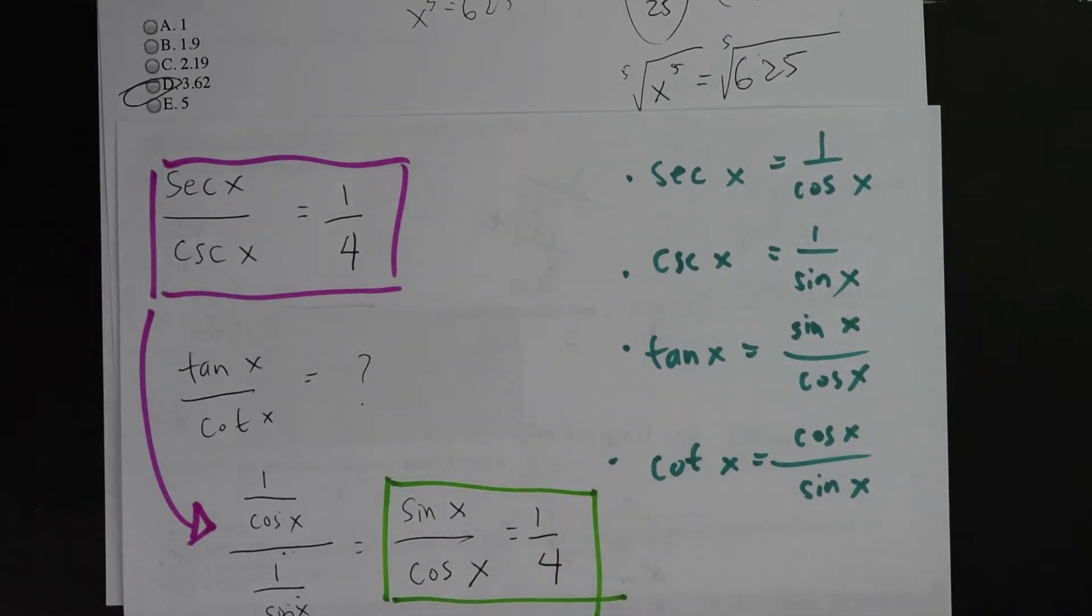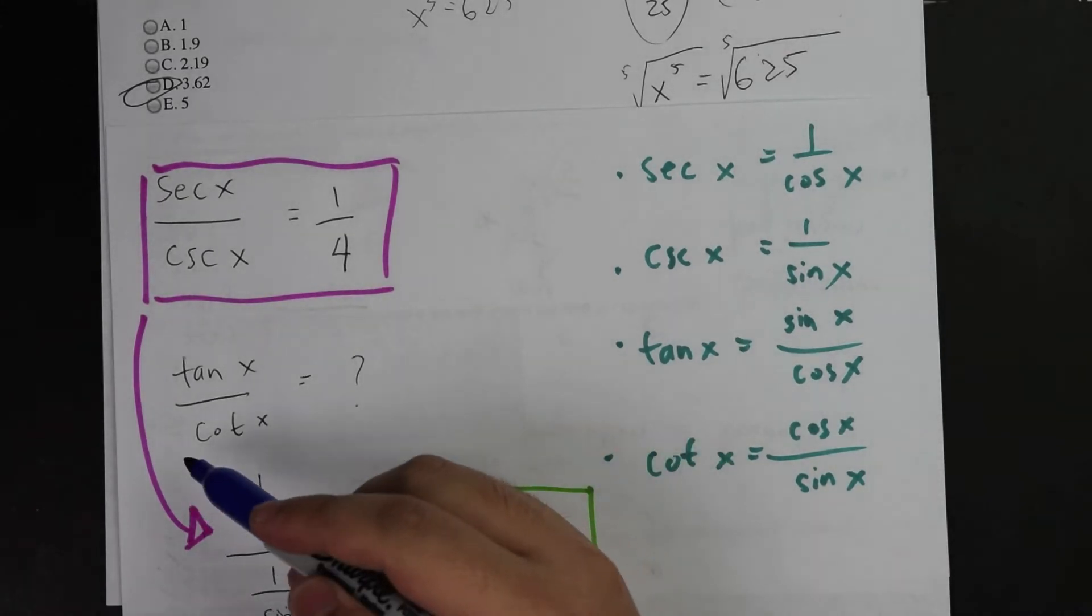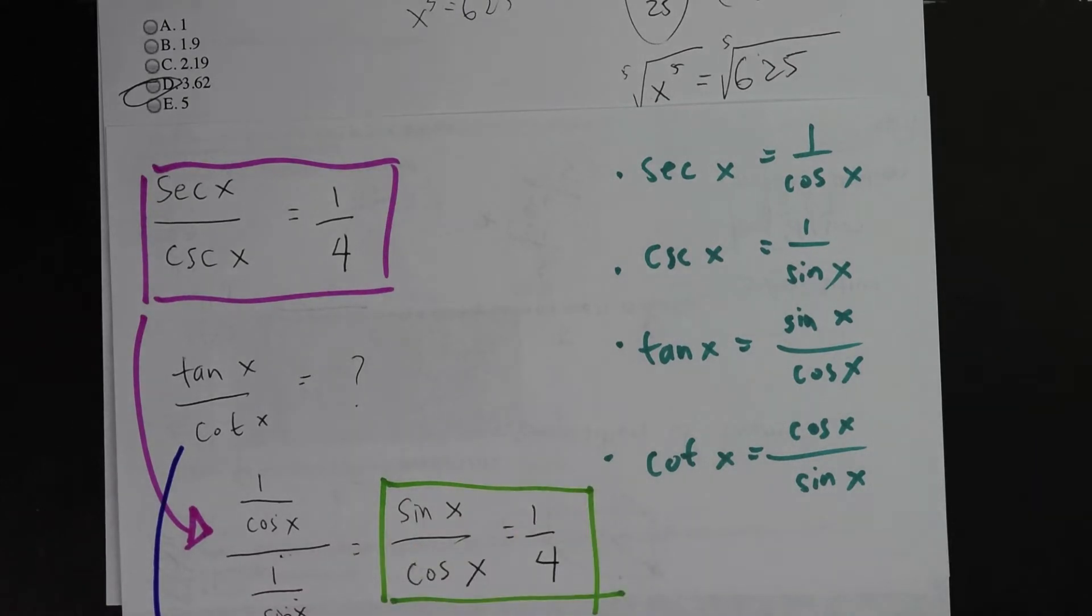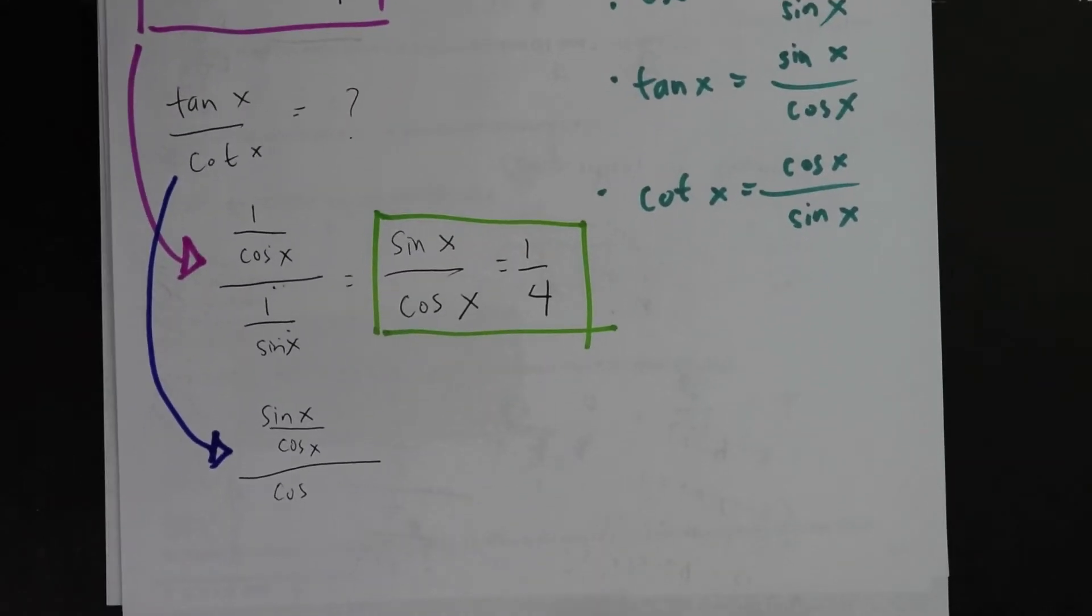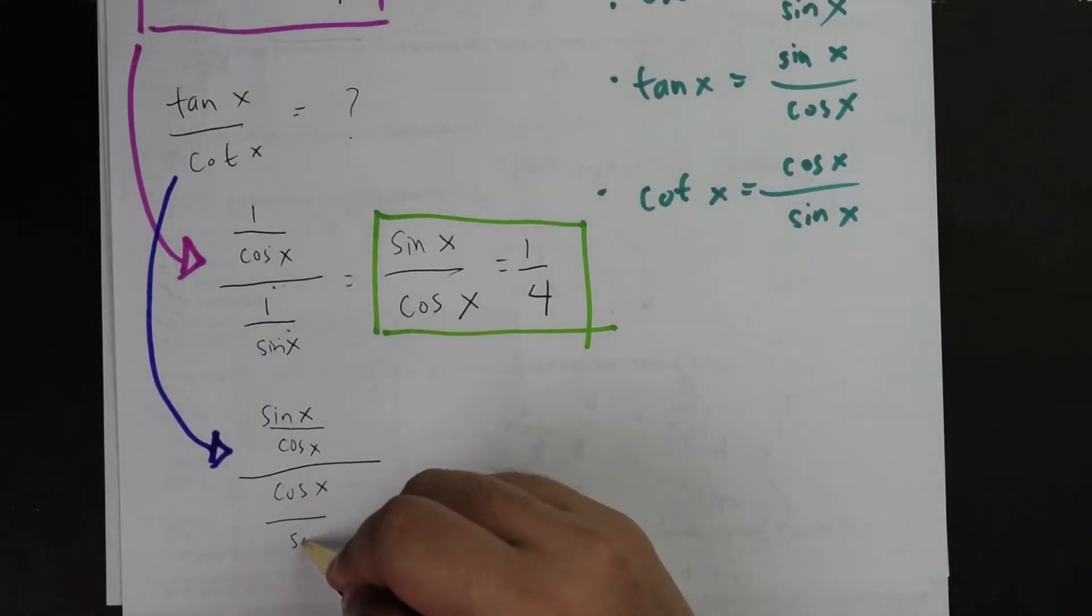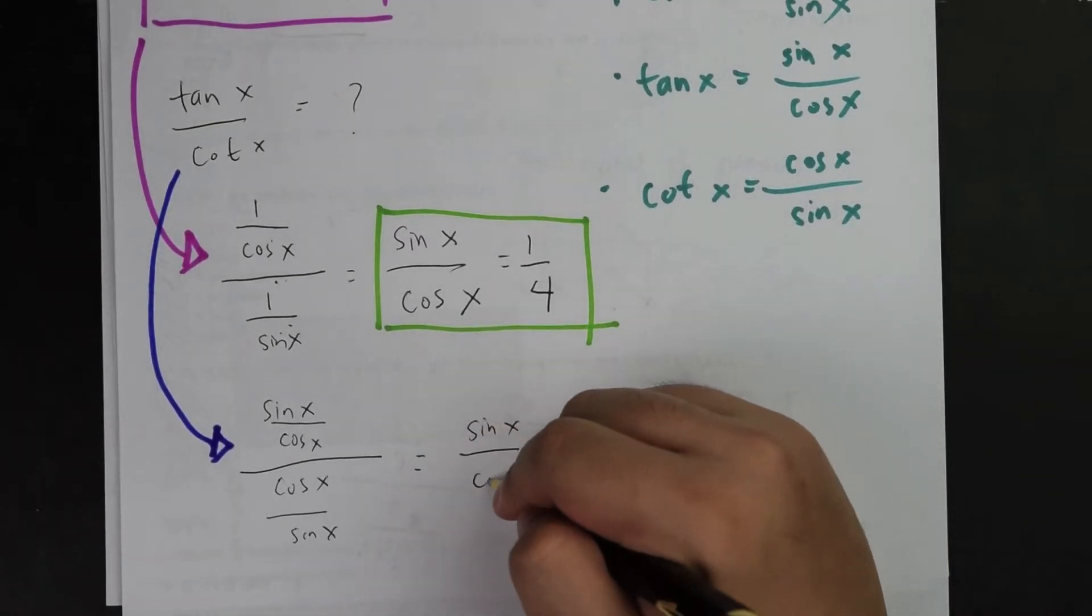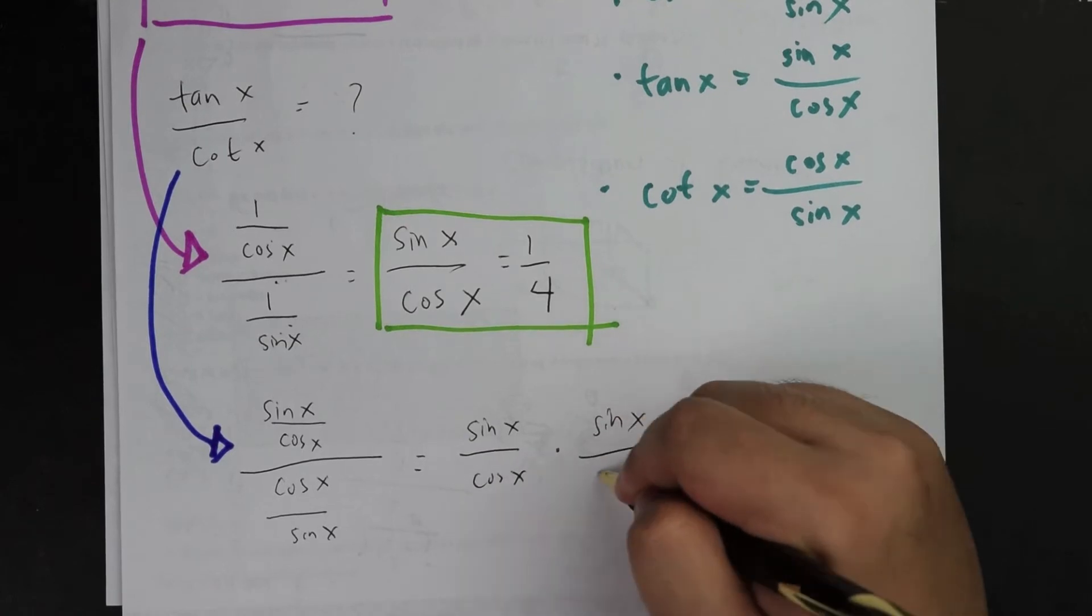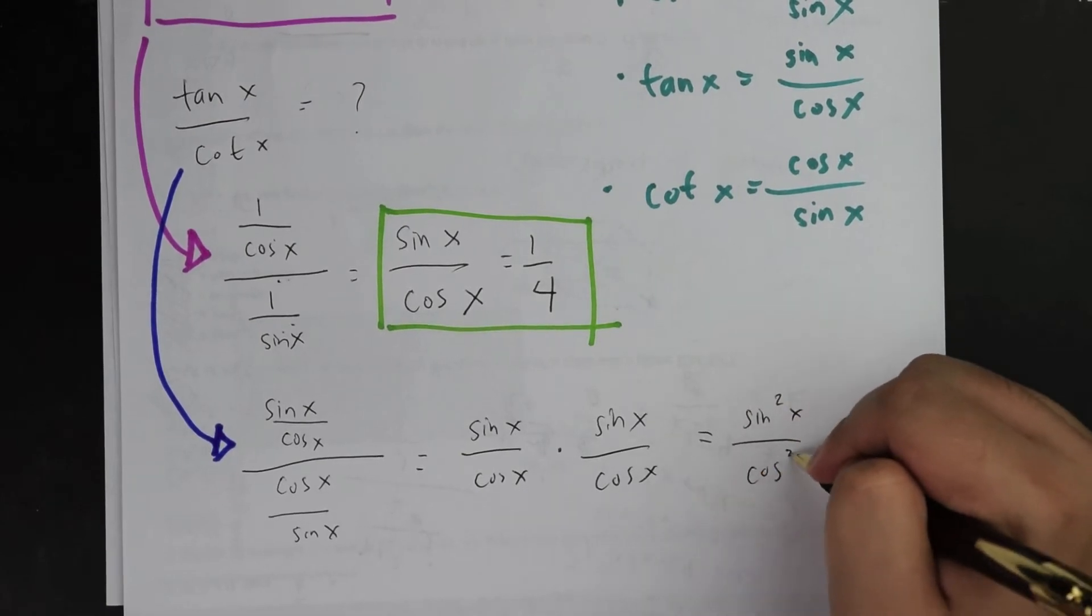Afterwards, I'm going to continue on and do the same thing for tangent x over cotangent x. I'm going to simplify the terminology. Tangent x is sine x over cosine x divided by cotangent which is cosine x over sine x. What happens is it's going to be sine x over cosine x times sine x over cosine x twice. Thus, it will be sine squared x over cosine squared x.